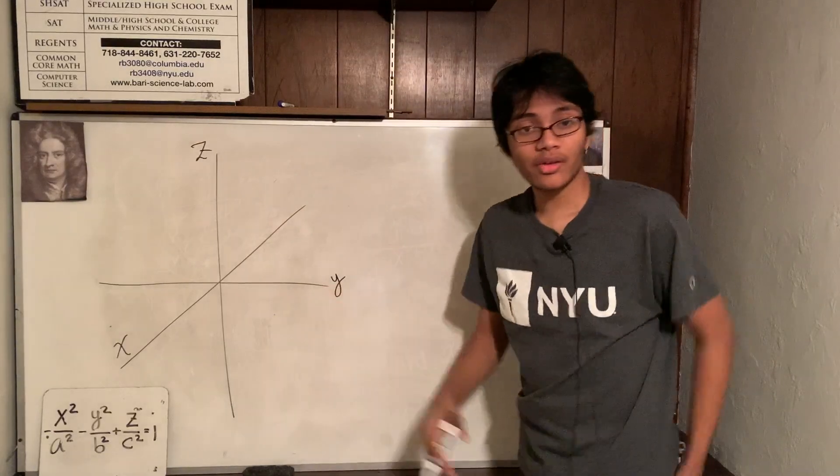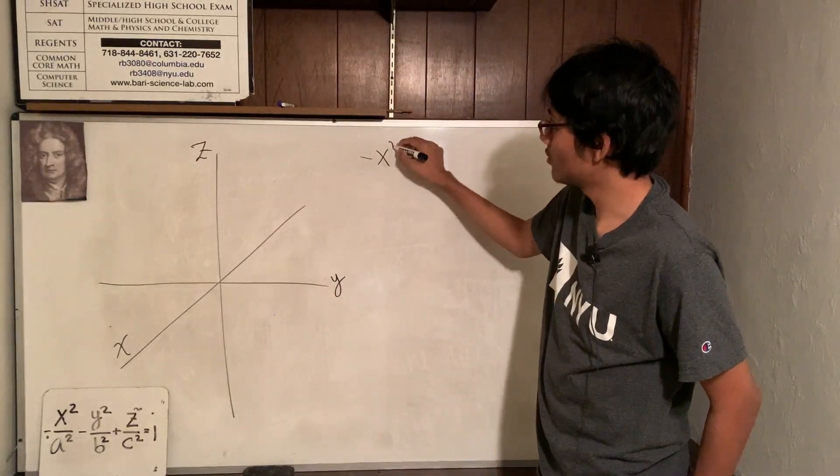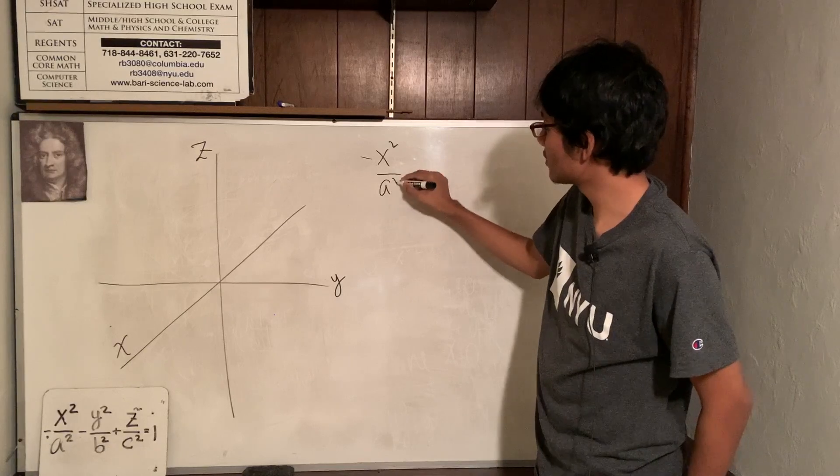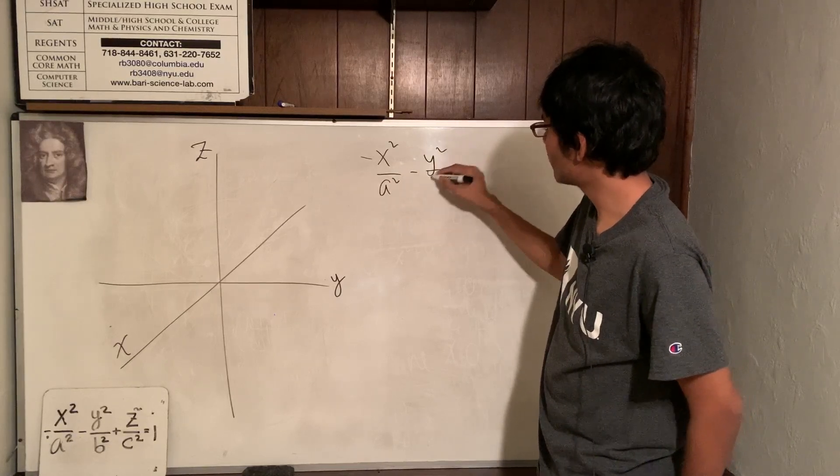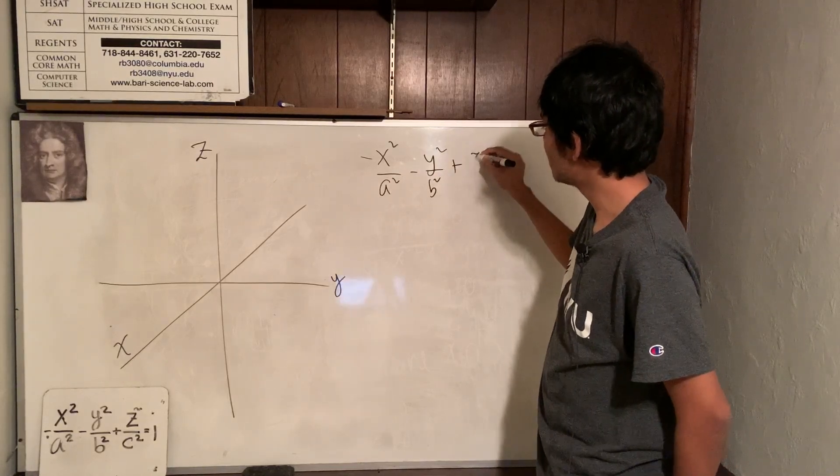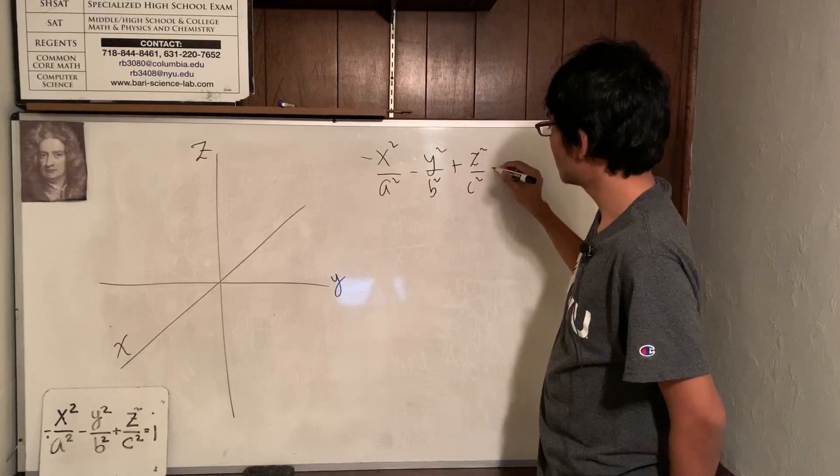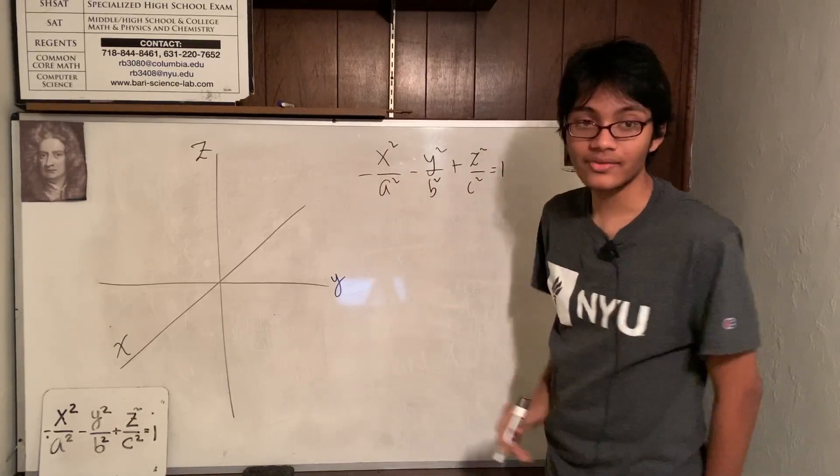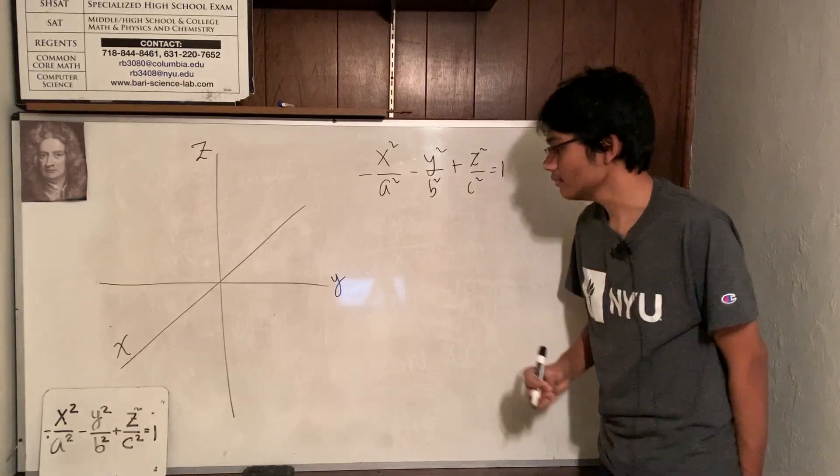And let's rewrite our equation. I love the writing equation. So, negative x squared over a squared, minus y squared over b squared, plus z squared over c squared. And all of that, hot fuzz is equal to 1.